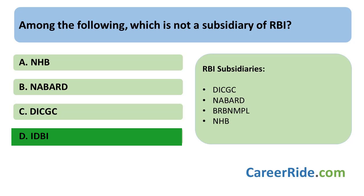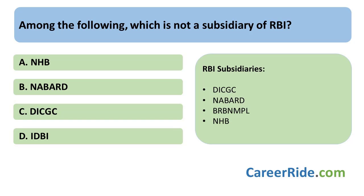DICGC stands for Deposit Insurance and Credit Guarantee Corporation of India. NABARD is the Apex Body for Agriculture — it stands for National Bank for Agriculture and Rural Development. BRBNMPL is a subsidiary of RBI related to the issuance of currency notes and coins in India; it stands for Bharatiya Reserve Bank Note Mudran Private Limited. And NHB is the Apex Body for Housing Development in India — it stands for National Housing Bank.